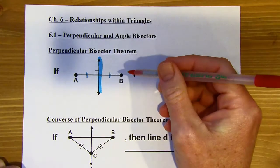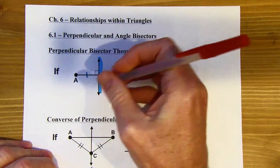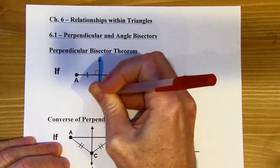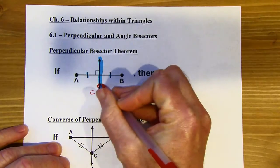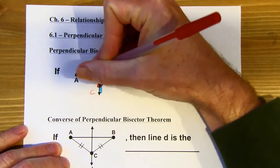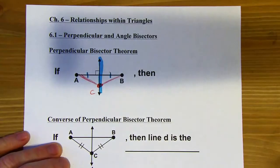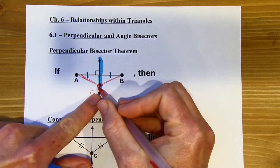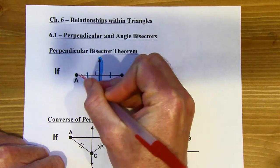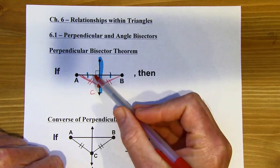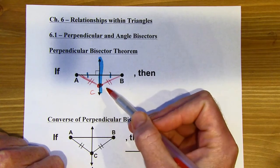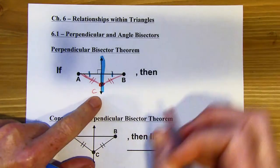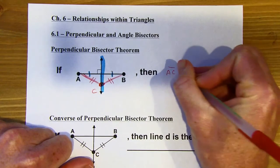The idea with the Perpendicular Bisector Theorem is that if you choose a random point on a perpendicular bisector — I'll call this point C — and draw line segments connecting that point to the endpoints of segment AB, then C is going to be the same distance from those two endpoints. So AC is going to be congruent to BC. We could figure that out using the HL theorem with these two right triangles and the reflexive property, but now we can use the Perpendicular Bisector Theorem to say the same thing: AC is congruent to BC.